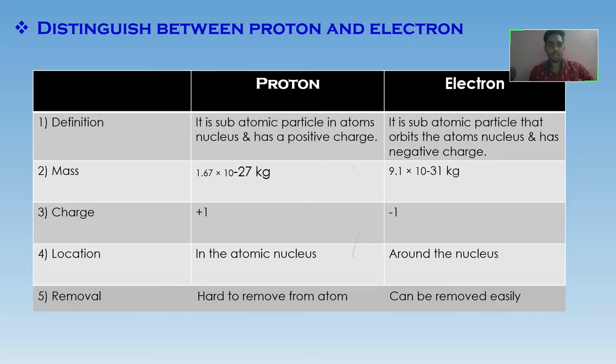Now, let's see the difference between proton and electron. Proton is a subatomic particle in atom nucleus and has a positive charge, whereas electron is a subatomic particle that orbits the atom's nucleus and has negative charge.